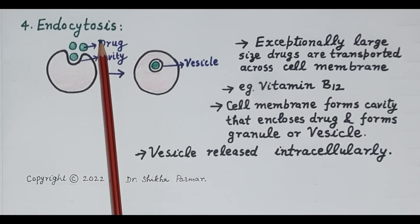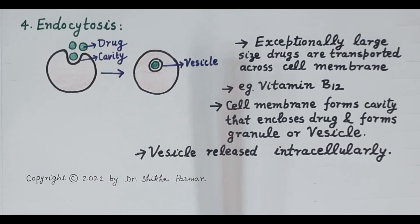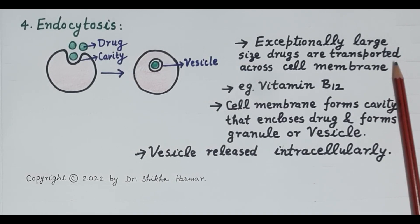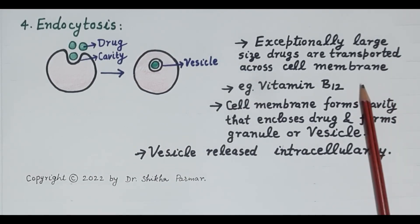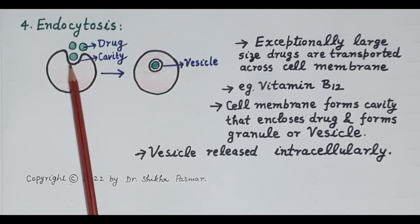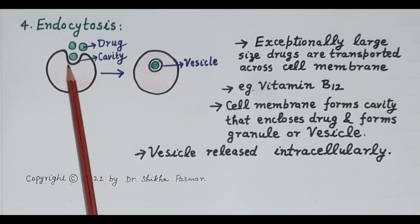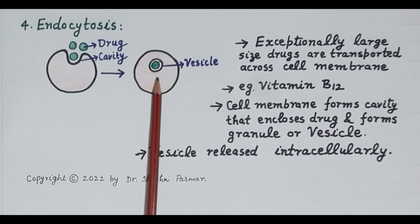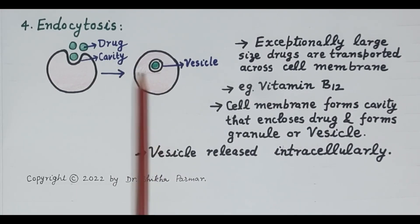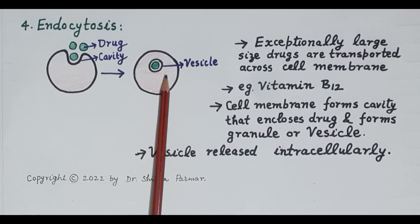The fourth type of transport mechanism is endocytosis. Exceptionally large-size drugs are transported across the cell membrane by this process — for example, vitamin B12. Looking at this diagram: the cell membrane forms a cavity that encloses the drug, forming a vesicle. The vesicle is then engulfed inside the cell, transporting the drug from the extracellular fluid to the intracellular fluid — this process is called endocytosis.